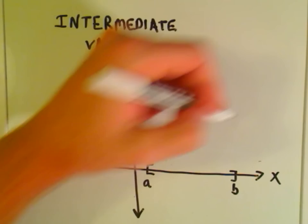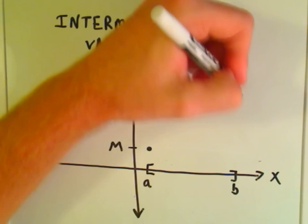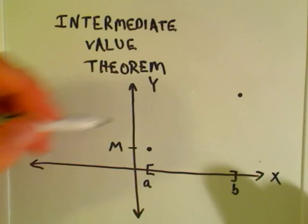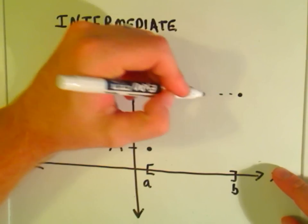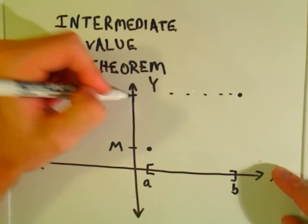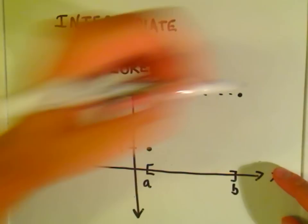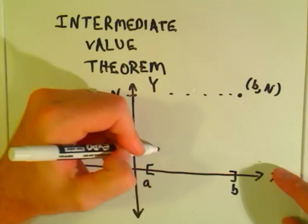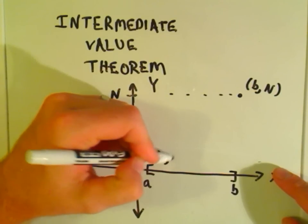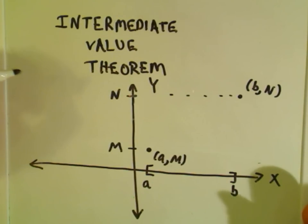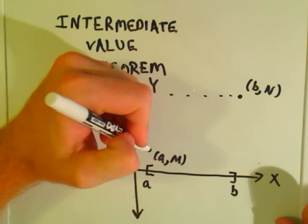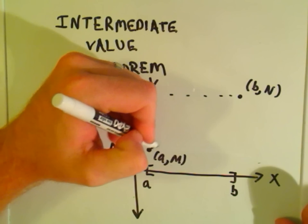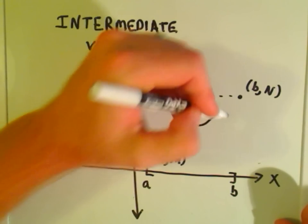And maybe up here at b it equals some value. It doesn't have to be a different value, but we'll say that this is the y-coordinate of, we'll say n up here, so this is the point (b, n), this is the point (a, m). Okay, so if it's a continuous function, we have to be able to get from our bottom point up to our other point.